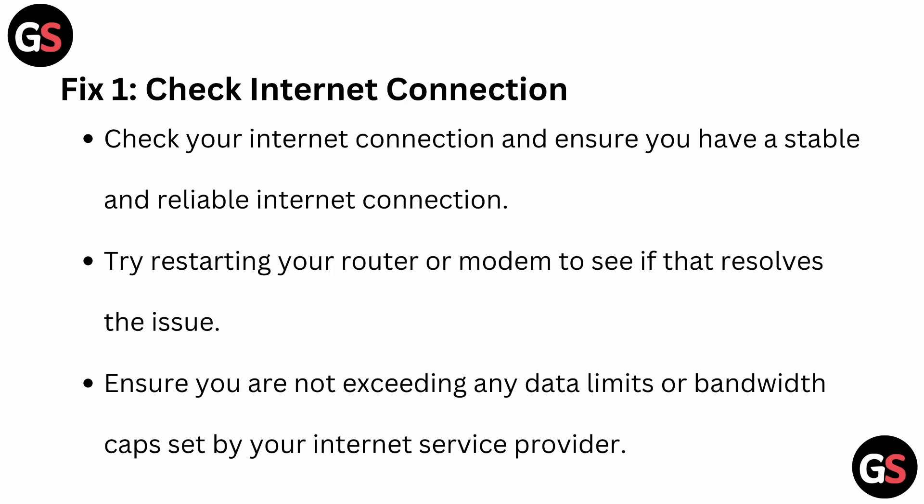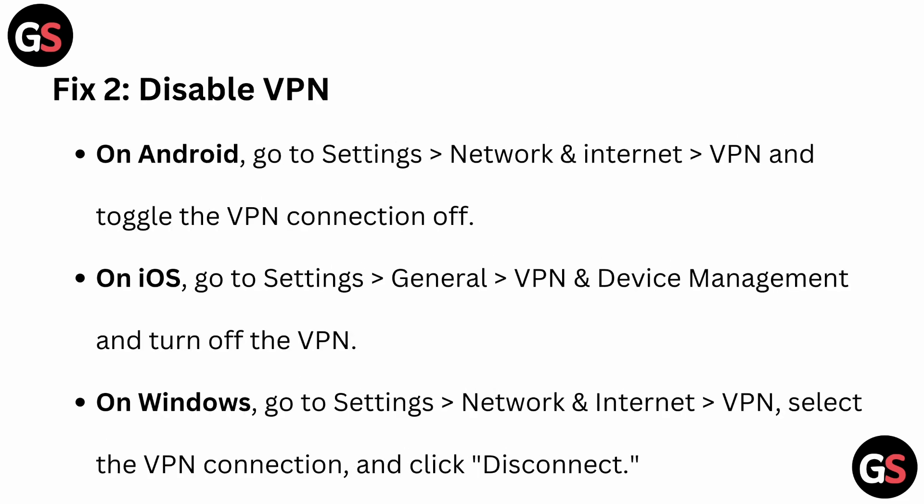Fix 2: Disable VPN. On Android, go to Settings, then Network, then VPN, and simply toggle the VPN connection off. On iOS, go to Settings, then General, where you will find VPN and Device Management — turn off the VPN.